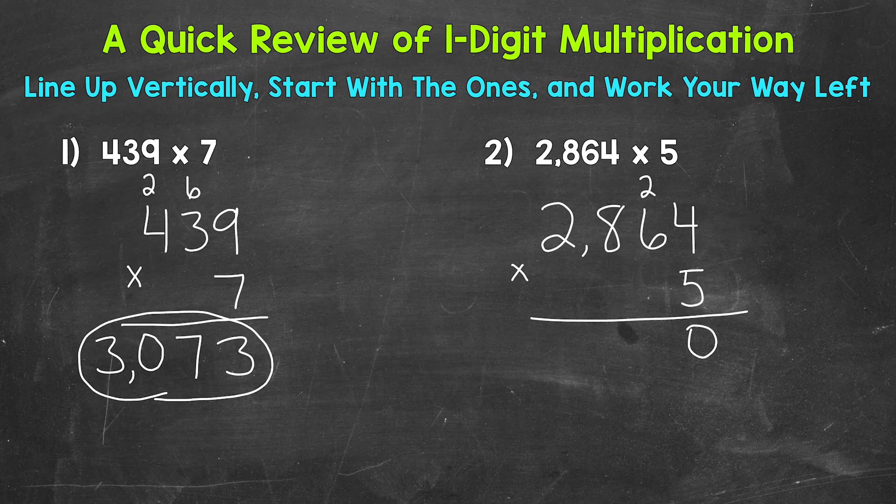Then we have the tens place, where we have a 6. 5 times 6 is 30, plus the carried 2 is 32. Put our 2, carry our 3.